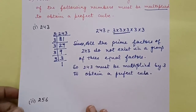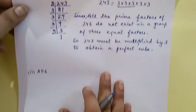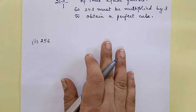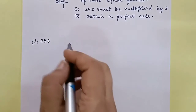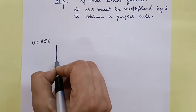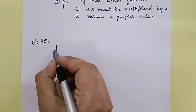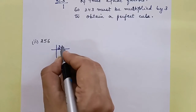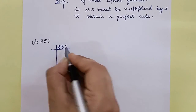Now let's see the second part. The number given is 256. Let's first do the prime factorization of 256.